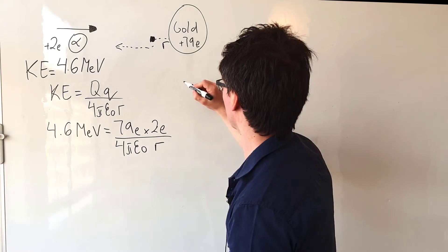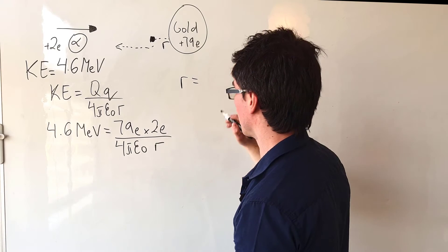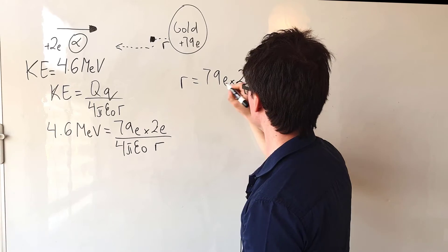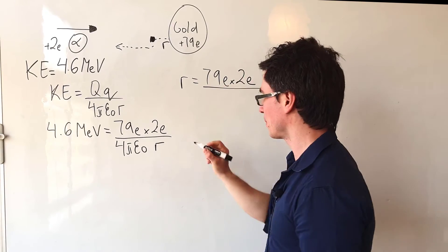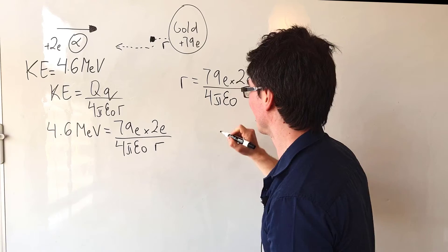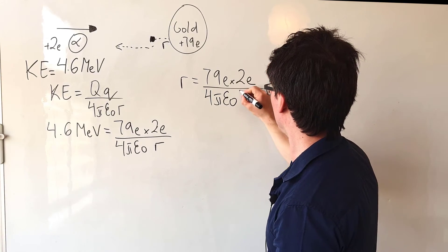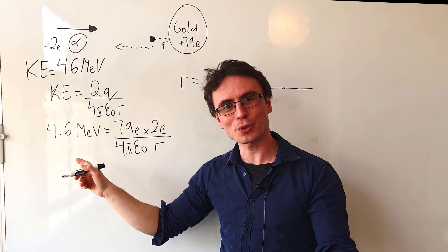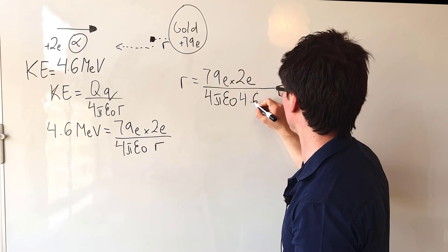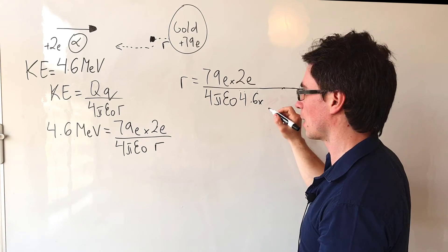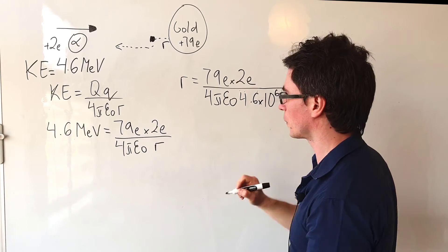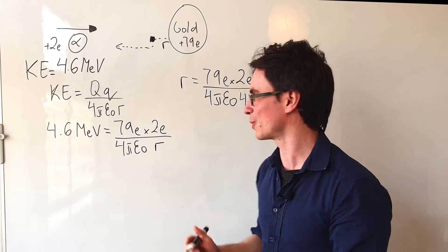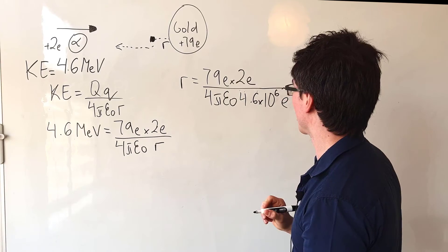Let's rearrange for the distance r. And what we are going to get is that r will be equal to 79E times 2E divided by 4π epsilon naught multiplied by 4.6. Let's convert the 4.6 mega electron volts to standard units. So this will just give us 4.6 multiplied by mega, which is 10 to the power of 6. And to convert from the electron volts to joules, all I need to do is just multiply by the elementary charge.